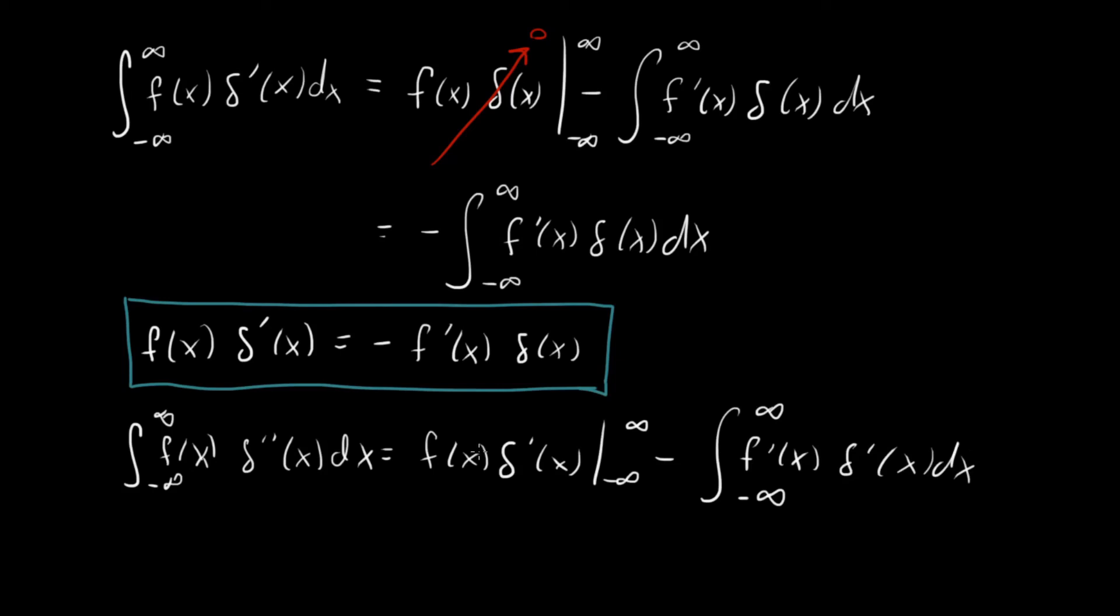Let's look at this first piece again. Let's think a bit about what delta prime of x is going to look like. We know that the delta function is constantly equal to zero outside of the origin. So what that means is if you have a constant zero and you take the derivative, you're going to get zero again. So that means that at infinity and minus infinity delta prime of x is equal to zero. So this whole thing contributes zero.